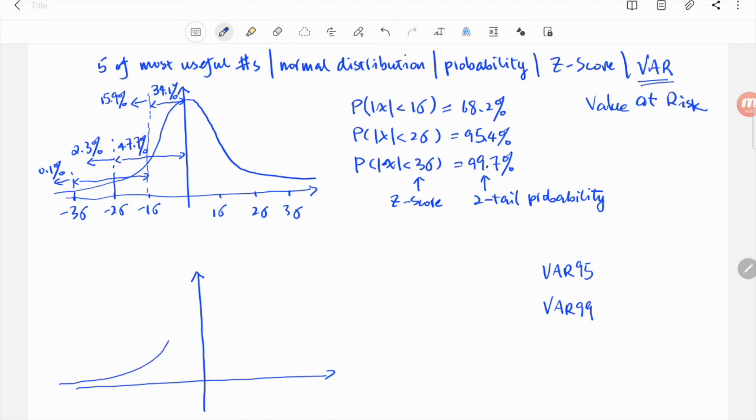Using normal distribution as an example again, one way to understand VAR is just to think of it as the z-score. So, 199 is how many standard deviations at which the one-tail probability is 1%. What it says is the probability you lose more than this n sigma is 1%.